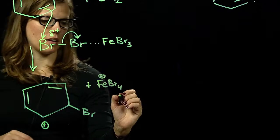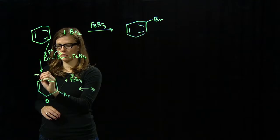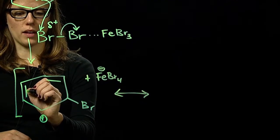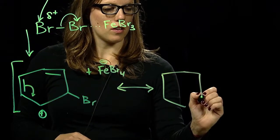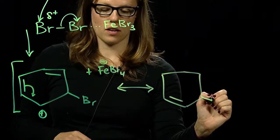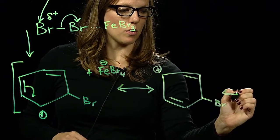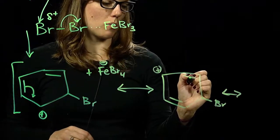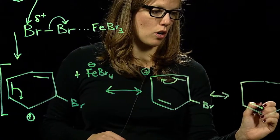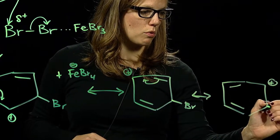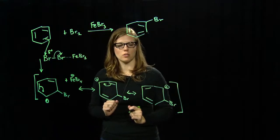This carbocation has resonant stabilization similar to what we've seen for other electrophilic aromatic substitutions. The pi electrons next door can satisfy the carbocation as drawn and leave behind a new carbocation. We can also have one more resonant structure in which the other pi electrons flip over to give a third carbocation. So three of the carbon atoms of this intermediate can hold the positive charge.